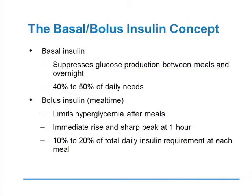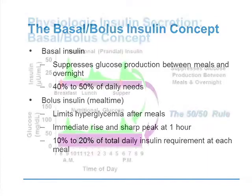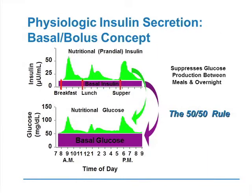The basal-bolus concept: the basal protects you between meals and overnight in terms of hepatic glucose output, and is usually about 40 to 50% of daily insulin needs. Prandial or bolus insulin limits hyperglycemia after meals — its immediate rise and sharp peak at one hour tends to bring the postprandial down — and is about 10 to 20% of total daily insulin requirement at each meal. You want to aim for the 50-50 rule and avoid over-basalization.